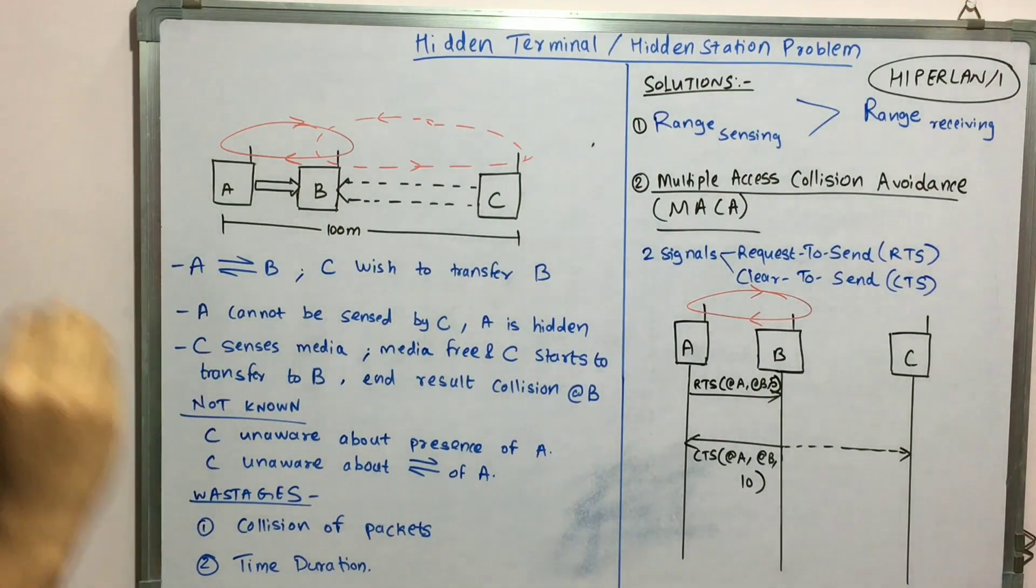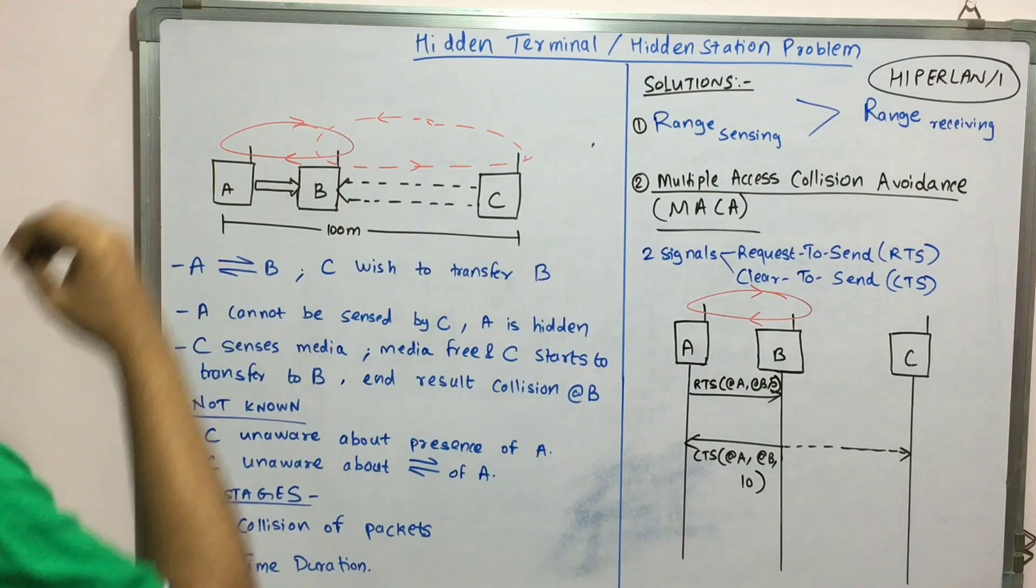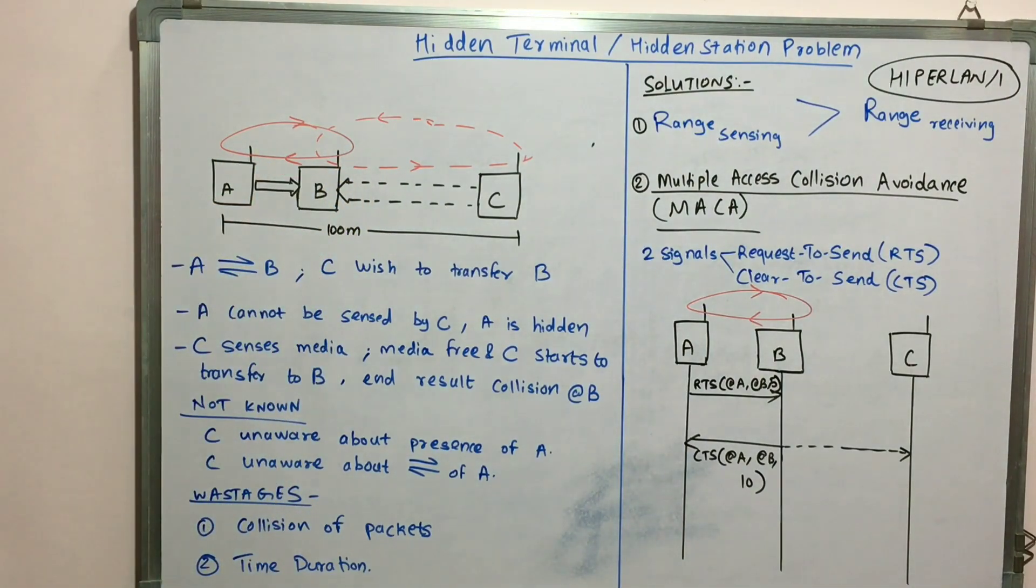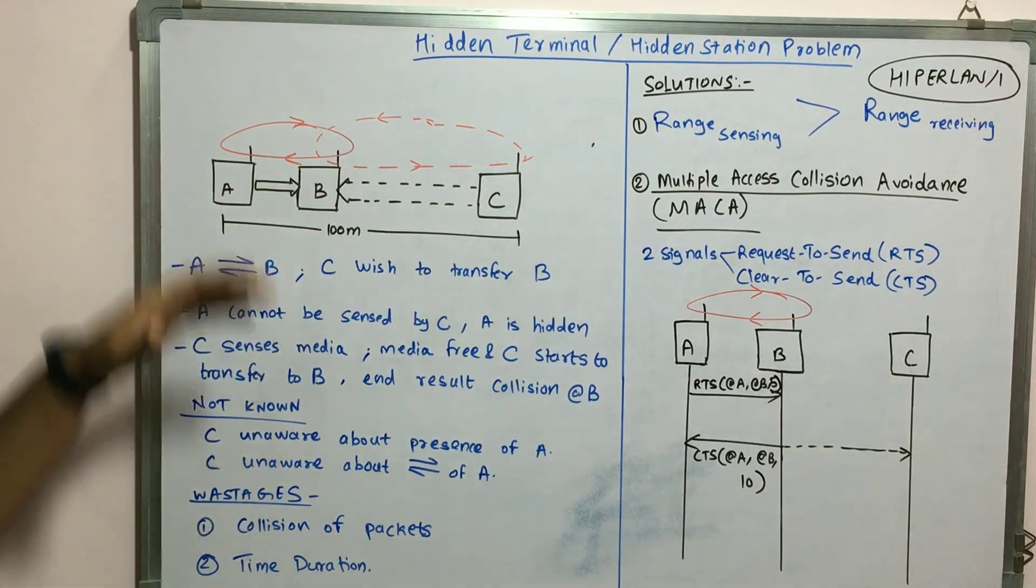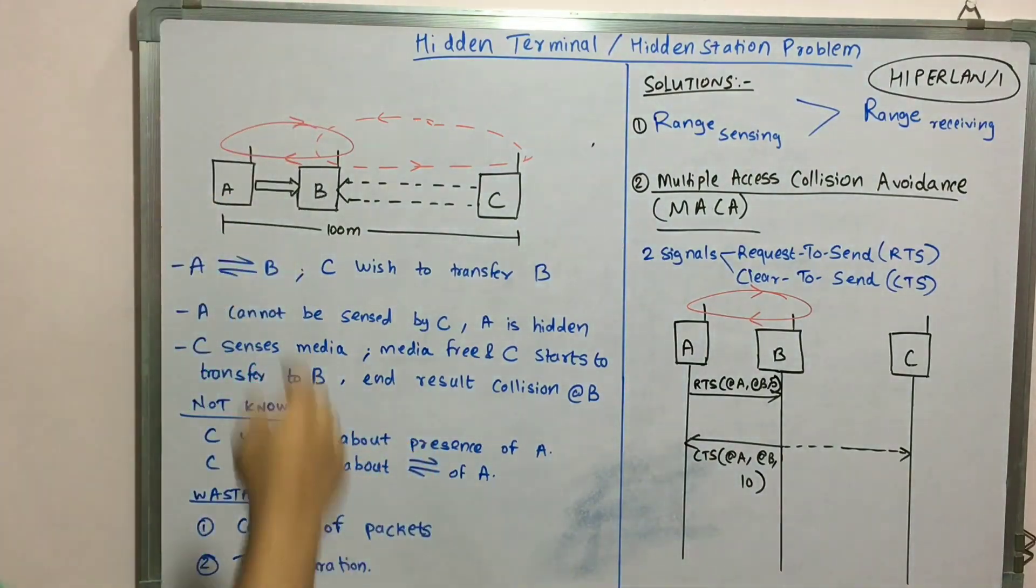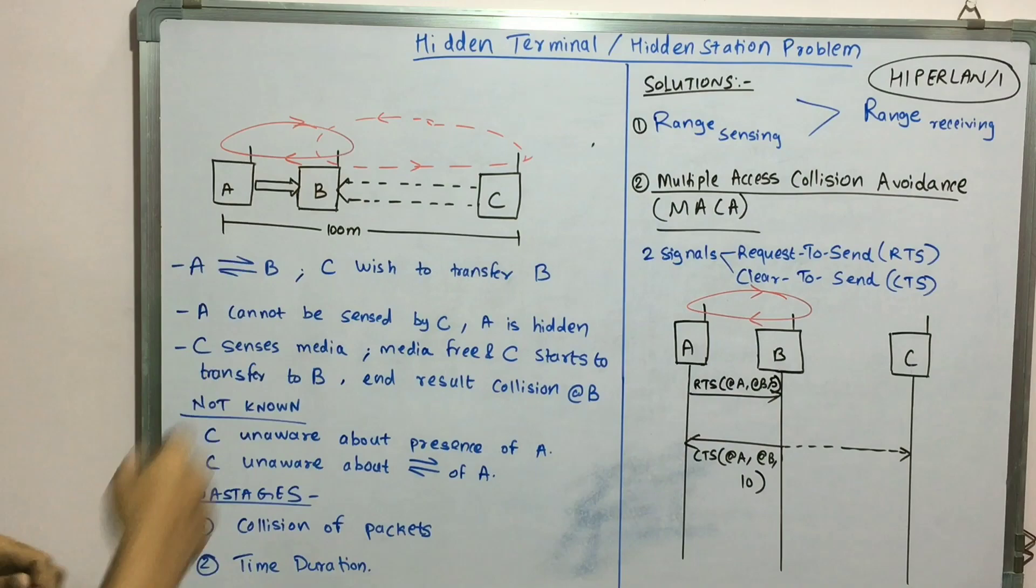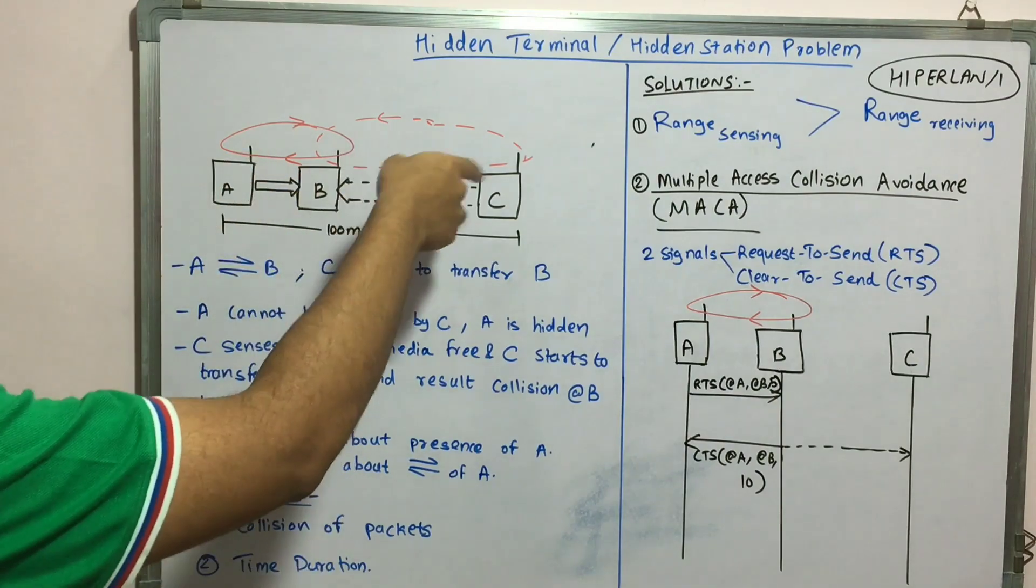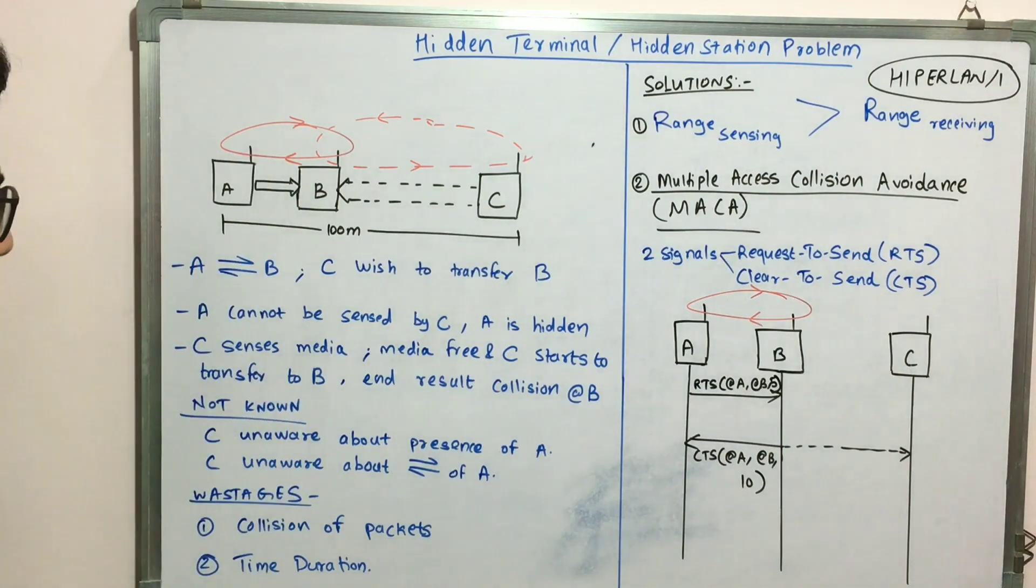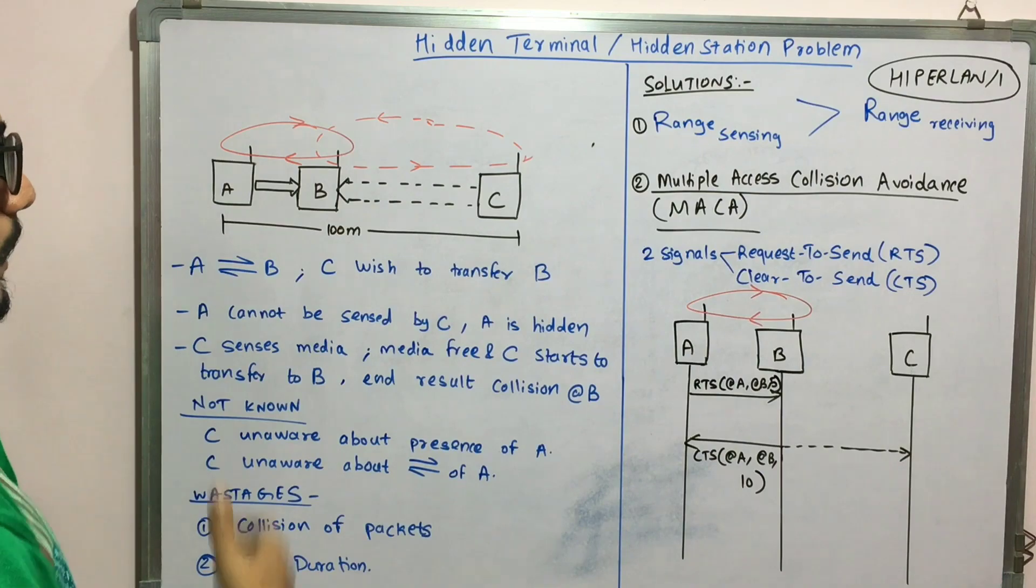There are two cases which happen in this. C is unaware about the existence or presence of A, meaning C doesn't know that A is there because it's hidden because of this B. C is unaware about the data transfer that A is transferring to B. So there are two major wastages: collision of data packets and time wastage.